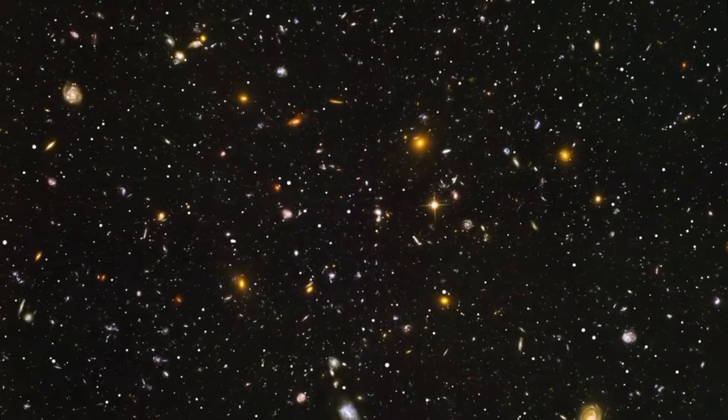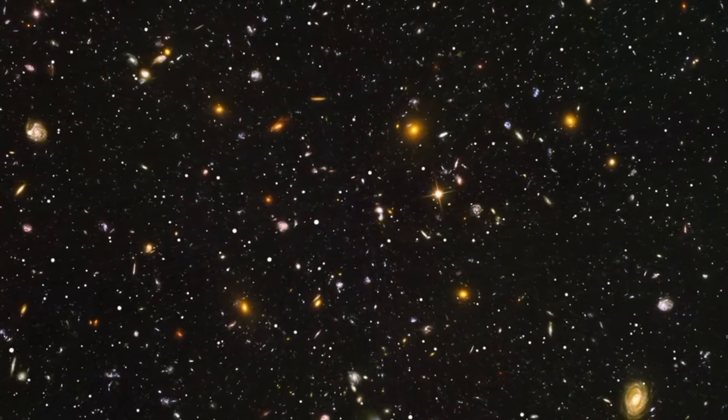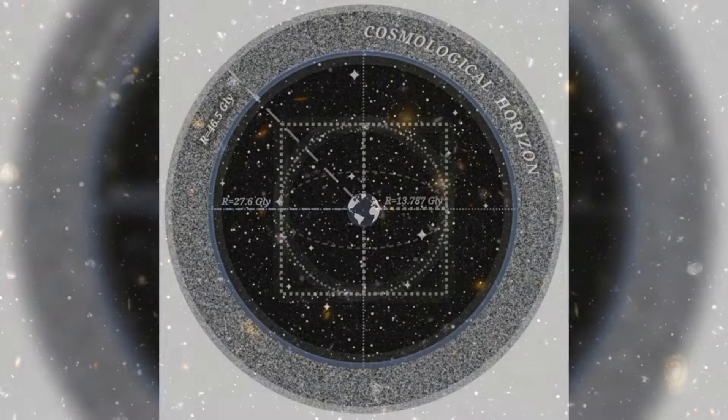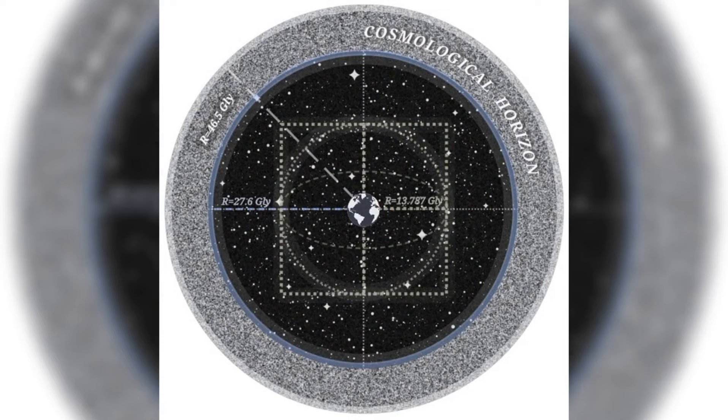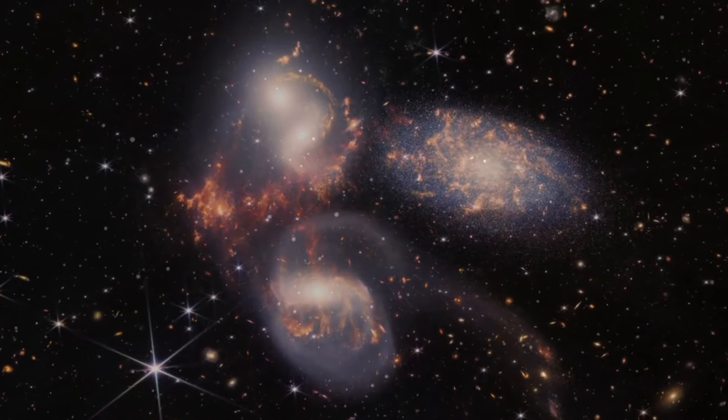As we grapple with this paradigm-shifting revelation, it becomes evident that our understanding of the universe's vastness is intricately tied to its expansion. The Hubble radius, or Hubble sphere, represents the visible extent of our universe, currently estimated at approximately 46.5 billion light-years. Remarkably, the James Webb Space Telescope has identified galaxies, such as the impressive Macy's galaxy, existing just 450 million years after the Big Bang, within this Hubble sphere.